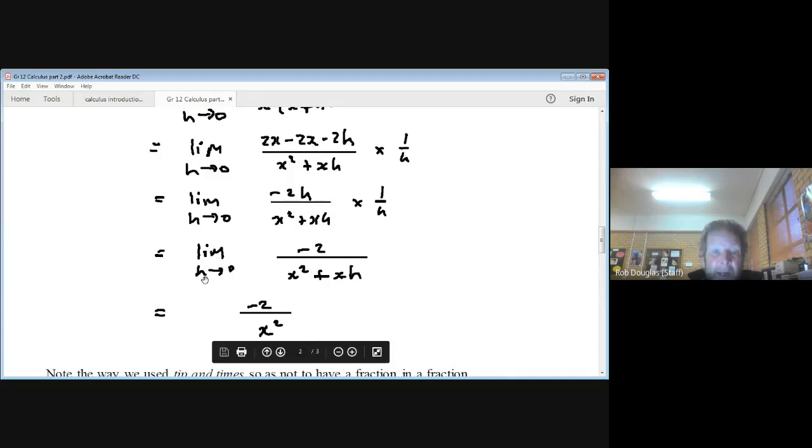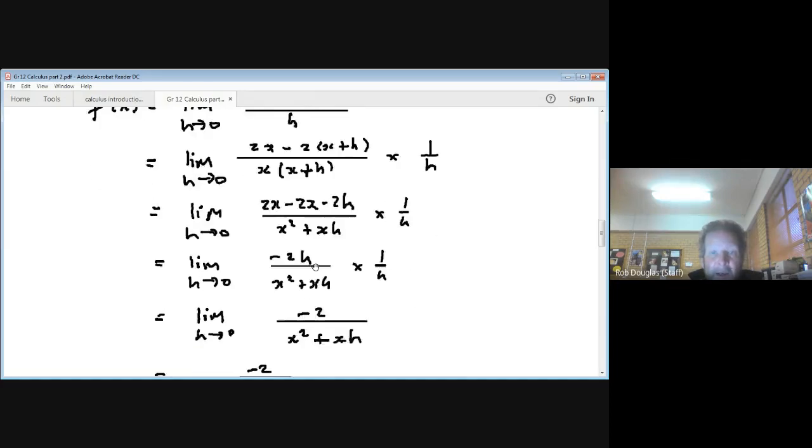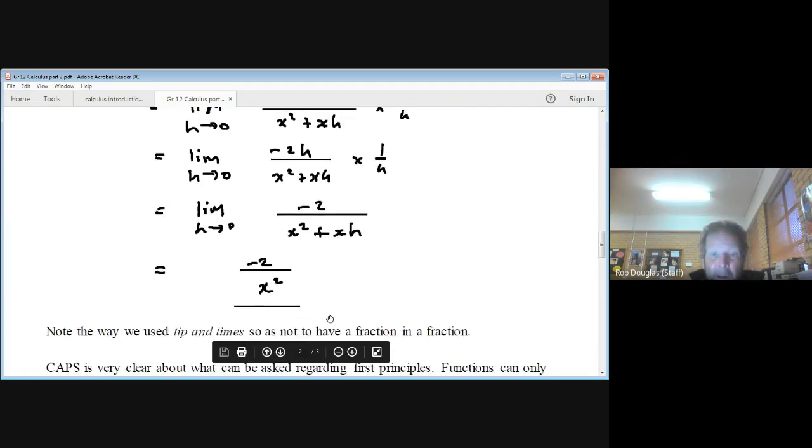And that's why the limit as h approaches 0, and we just did a whole bunch of algebra to get it into this simple form. Now, the answer is just the minus 2 over x squared. You could write it as minus 2x to the minus 2. But anyways, that's how you do it. That's a bit more challenging, but that's it for today.